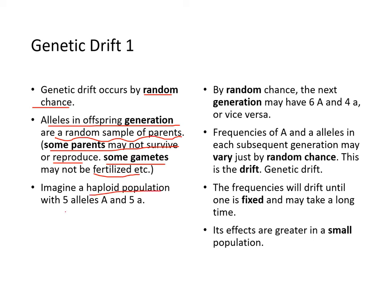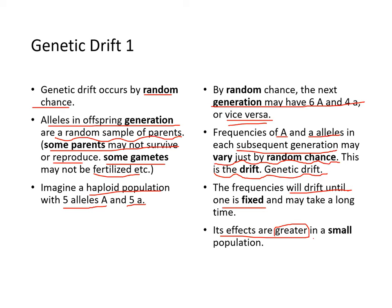Imagine a population with five big-A alleles and five small-a alleles. By random chance, the next generation may have six big-A and four small-a, or vice versa. The frequency of big-A and little-a alleles in each subsequent generation may vary just by random chance. This is genetic drift, and the frequency will drift until one is fixed, which may take a long time. Its effects are greater in a small population.